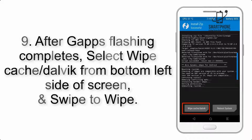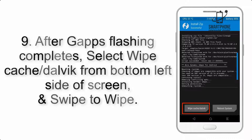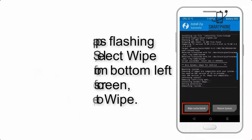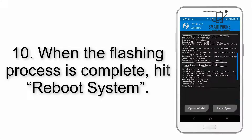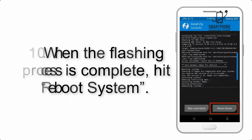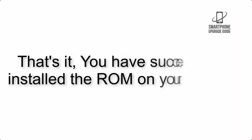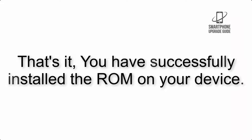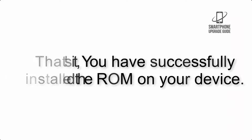Step 8: Flash the GApps zip package in the same manner. Step 9: After GApps flashing completes, select wipe cache and dalvik from the bottom left side of the screen and swipe to wipe. Step 10: When the flashing process is complete, hit reboot system. That's it — you have successfully installed the ROM on your device.